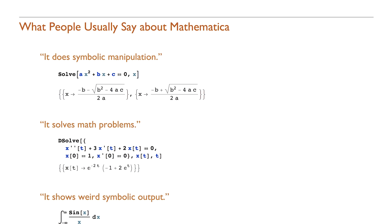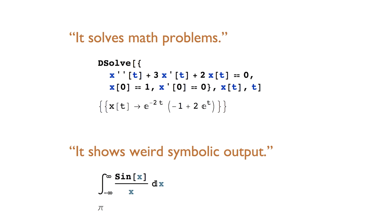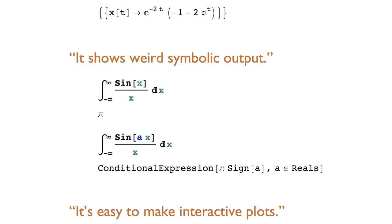Now if you're an engineering college student and you've been in the computer lab late at night, you've probably heard people say the following things about Mathematica. I can do symbolic manipulation. So for instance, if you want to solve this quadratic equation for x, you can say solve of ax squared plus bx plus c equals zero and it will solve for x. It solves math problems maybe. So here we have an ordinary differential equation, x double prime plus 3x prime plus 2x equals zero, some initial conditions, and d solve, d is for differential equation, d solve instead of solve will solve that differential equation for x of t.